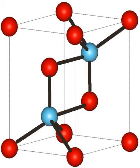Praseodymium oxide, or praseodymia, is the chemical compound composed of praseodymium and oxygen with the formula Pr₂O₃. It forms white hexagonal crystals and crystallizes in the manganese oxide, or bixbyite, structure.